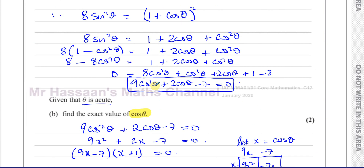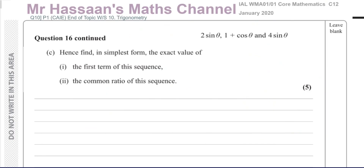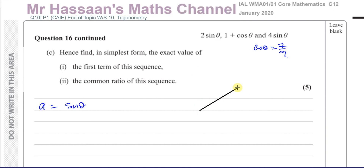That completes parts A and B. For part C, we need to find the exact value of the first term and the common ratio. The first term is 2 sin θ. Since cos θ = 7/9, I'll draw a right-angle triangle in the first quadrant. Cosine is adjacent over hypotenuse, so adjacent = 7 and hypotenuse = 9.